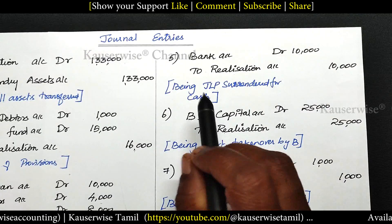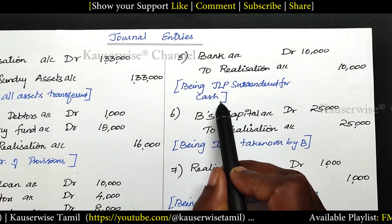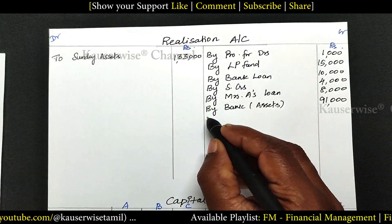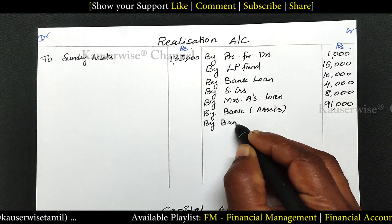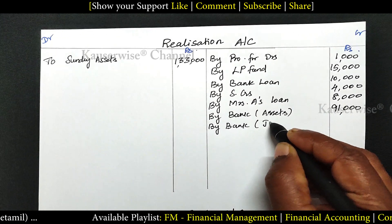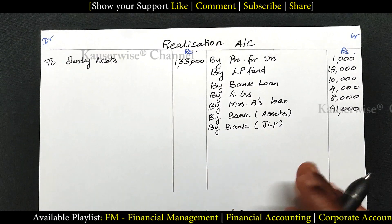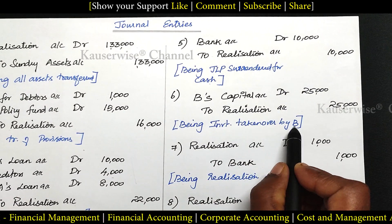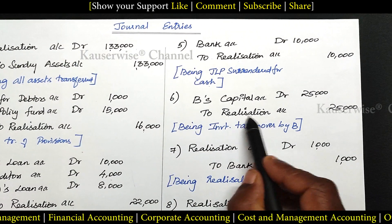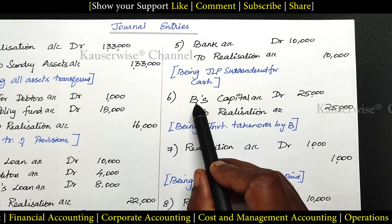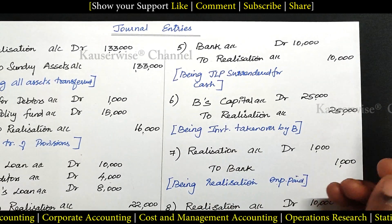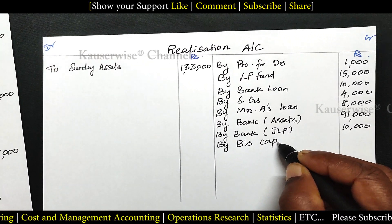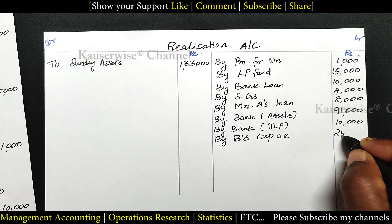Fifth entry — joint life policy surrendered for cash: Bank Dr. to Realization — enter bank under realization account credit side — 10,000. Sixth entry — investment taken over by B: B's Capital Dr. to Realization — instead of bank we enter B's capital — enter 25,000 under credit side of realization account.